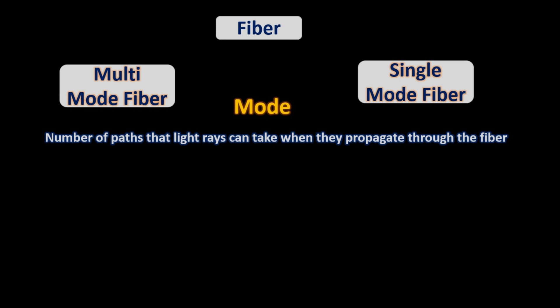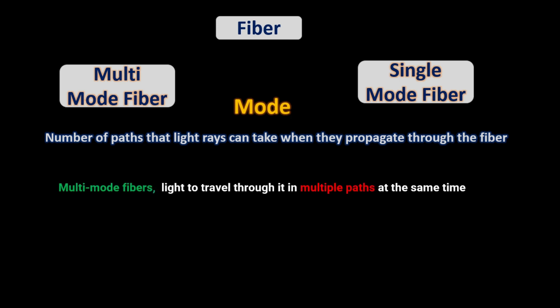As multi-mode fiber's name says — multi — it allows multiple modes or paths where light is reflected or refracted millions of times in multiple paths before it reaches the end of the fiber. Single-mode fiber is a single path that allows only one light beam to travel through it.